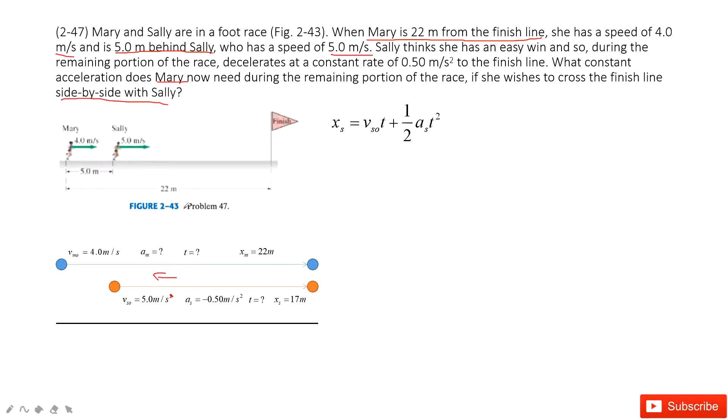First of all, we look at Sally. For Sally, we know the total displacement is 17 meters, initial velocity is 5 meters per second, and acceleration for Sally is negative 0.5.